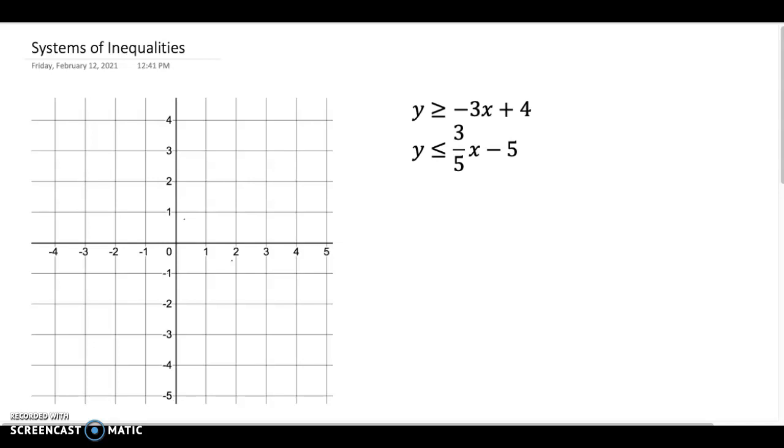So again, if you watched the last video, which you should have, we know that we graph these the same way we would graph them. So I'm graphing this one the same as if it said y equals negative 3x plus 4. The only thing I got to worry about is that this right here means it's going to be a solid line. And so this also means that it's solid.